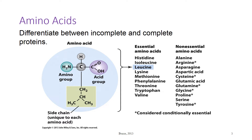Foods of animal origin are sources of high-quality protein, or complete dietary protein. High-quality protein provides more of the essential amino acids in the proportions needed by the body than the same amount of low-quality protein would provide. Compared to animal proteins, plant proteins are usually more difficult to digest and are lower in one or more of the essential amino acids. Therefore, they are referred to as incomplete dietary proteins.